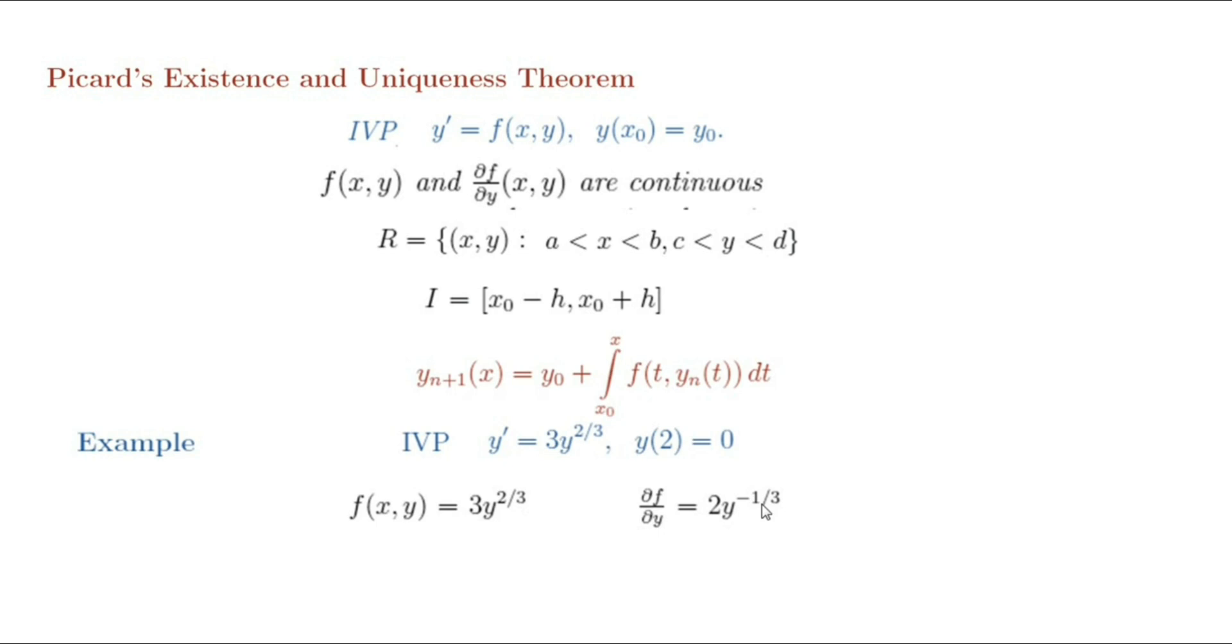Here, f(x,y) is continuous when y equals 0, but ∂f/∂y does not exist when y equals 0. According to the hypothesis of Picard's theorem, it does not exist. We came to conclude that this initial value problem has two solutions.